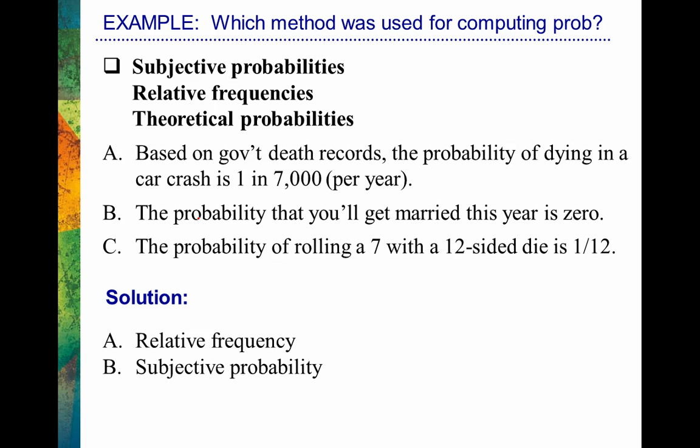The probability of rolling a seven with a 12-sided die is 1 out of 12. We don't need to roll the die to figure out relative frequencies — just based on understanding the properties of that die, knowing there are 12 different sides, we can figure out the probability theoretically. So that would be a theoretical probability.